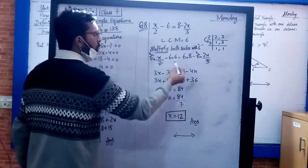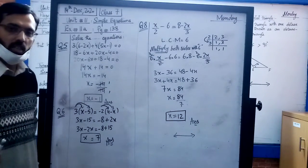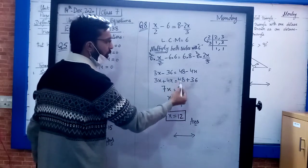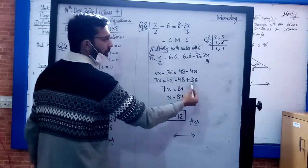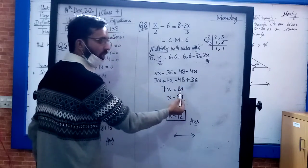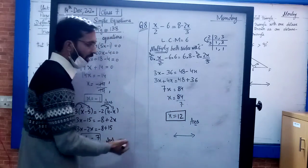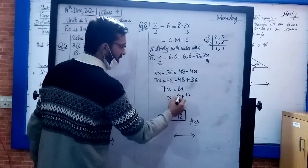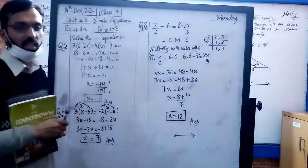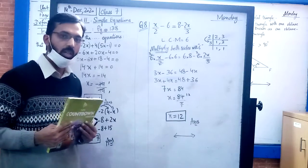Simplifying: 3x plus 4x equals 48 minus 36. Combining: 7x equals 12. Dividing: x equals 12. If you have any questions, refer to the examples shown in class. See you in the next video.